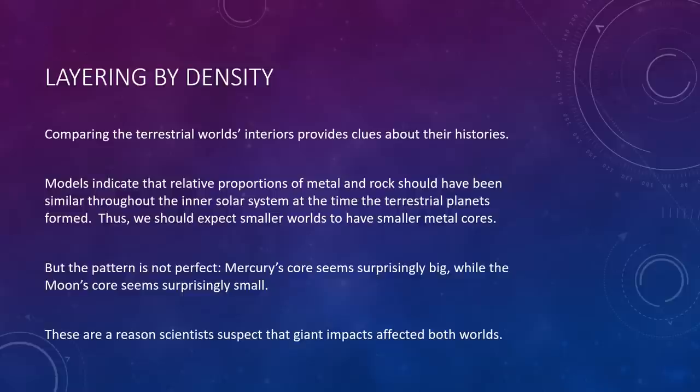Comparing the terrestrial worlds' interiors provides important clues about their early histories. Models indicate that the relative proportions of metal and rock should have been similar throughout the inner solar system at the time that they formed, which means we should expect smaller worlds to have correspondingly smaller metal cores. We do indeed see this general pattern in the figure on the previous slide, but as I mentioned, it's not perfect. Mercury's core seems surprisingly big, while the Moon's core seems surprisingly small. These surprises are a major reason scientists suspect that giant impacts affected both of those worlds.